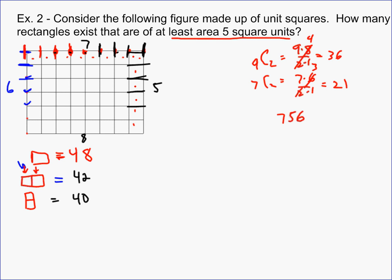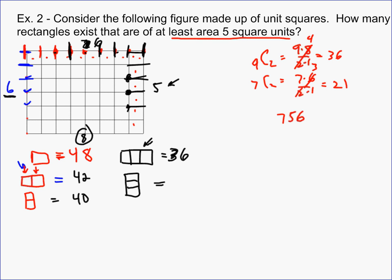For area 3, there are only two rectangle orientations: 1×3 or 3×1. For the 1×3 case, there are 6 ways to select horizontal lines separated by two and 6 ways for the vertical pair — giving 36. For the 3×1 case, there are 8 ways to choose adjacent vertical lines, and 4 ways to choose horizontal lines separated by two — giving 32.